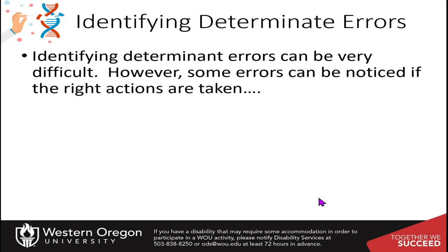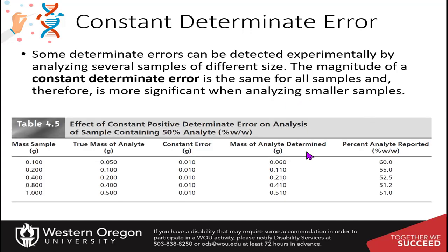How do you identify determinant errors? This can be very difficult — you make measurements, think the data is good, then do your calculations. Some errors can be noticed when collecting data if the right actions are taken. For a constant determinant error, the magnitude is the same for all samples, and it becomes more significant when analyzing small samples.